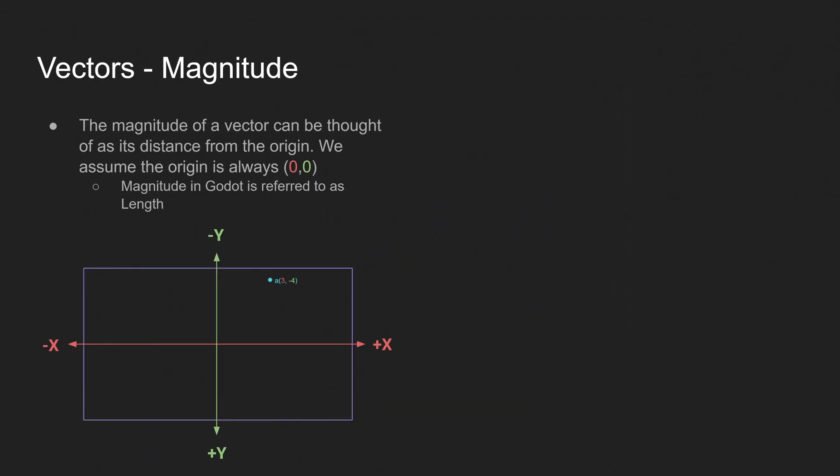So the magnitude of a vector. The magnitude of a vector can be thought of as its distance from the origin. And we assume the origin is always 0, 0. And magnitude in Godot is referred to as length. I've heard it both ways. I'm more familiar with it being called magnitude, so that's what I call it. But as we get into Godot, you'll see that they call it length in there. So how do we calculate the magnitude? It's pretty simple. We just use the Pythagorean theorem.